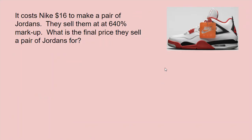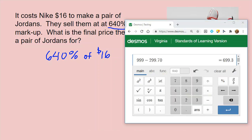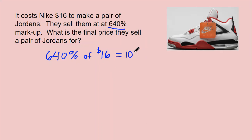Let's say you're trying to buy a pair of Jordans. Did you know it costs Nike only $16 to make a pair of Jordans and they sell them at a 640% markup? What would be the final price? We need 640% of $16. Using the Desmos calculator, 640% of 16 gives me 102.4, so that equals $102.40. That is the amount of markup being added to the shoe.